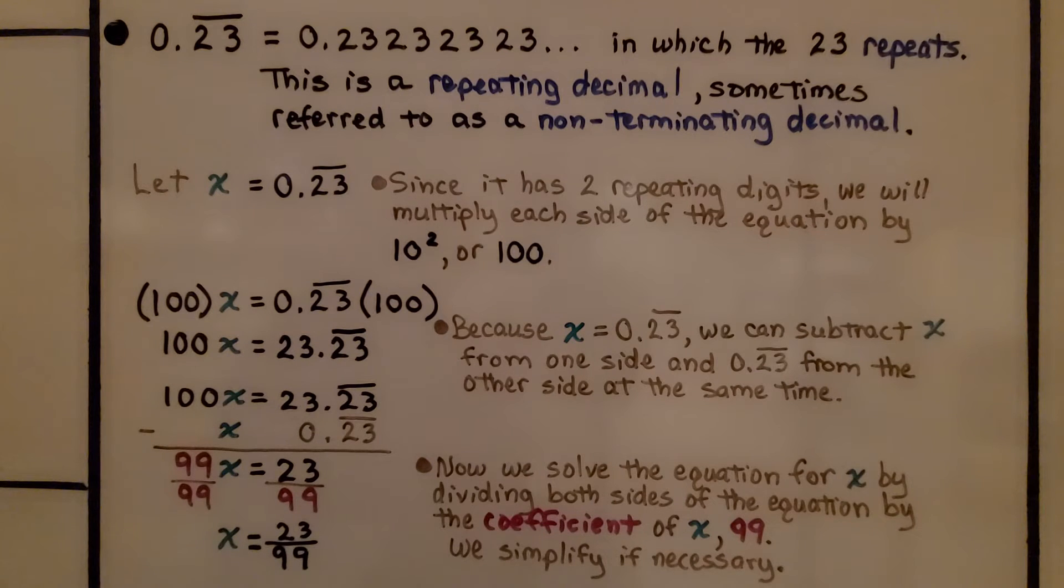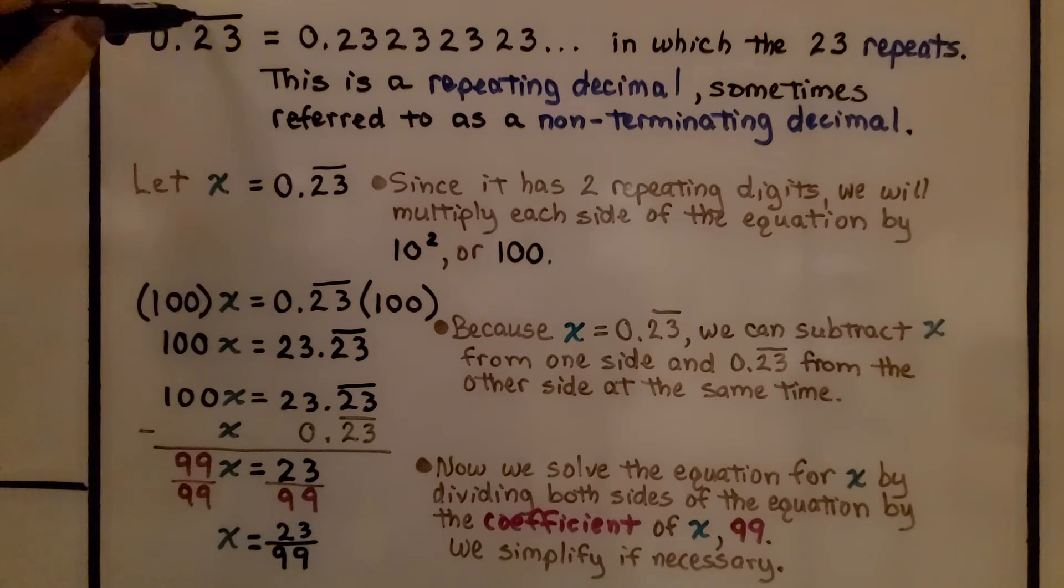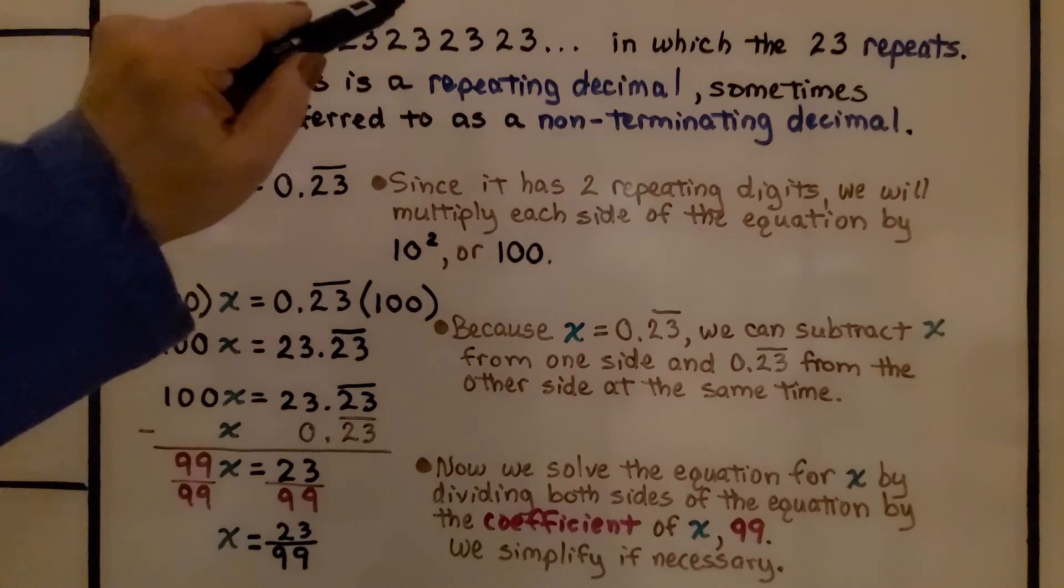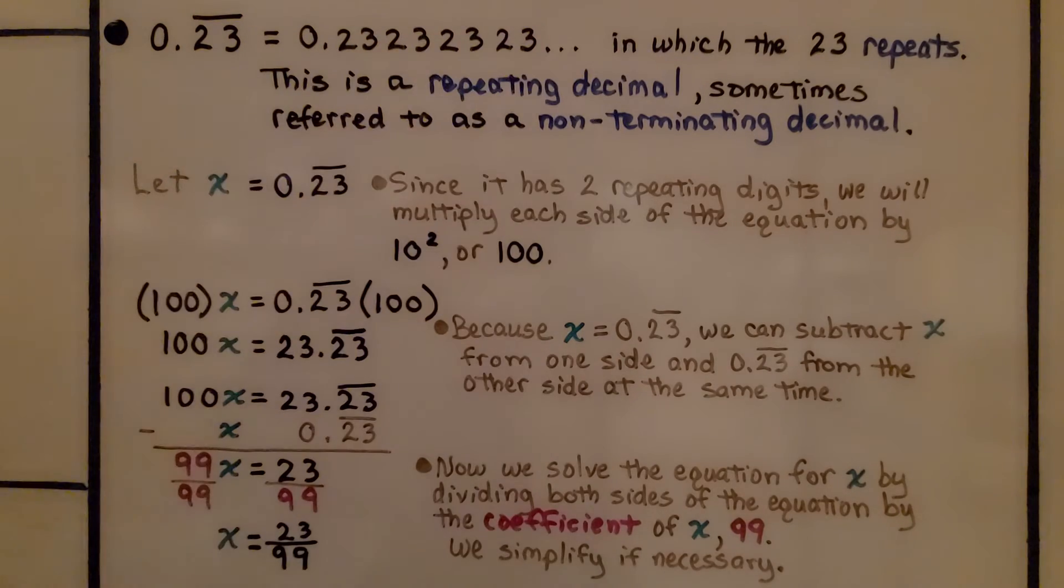Now this one's a little trickier. We have 0.23 and this 23 with the bar over the top means it's repeating. That means it's equal to 0.2323232323 and it continues on in which the 23 repeats. This is a repeating decimal, sometimes referred to as a non-terminating decimal. We have terminating decimals that stop at a specific place value and non-terminating decimals that will continue on with repeating digits.